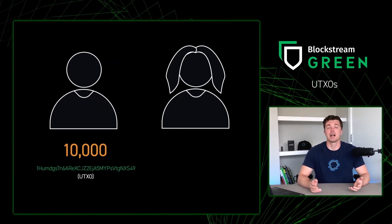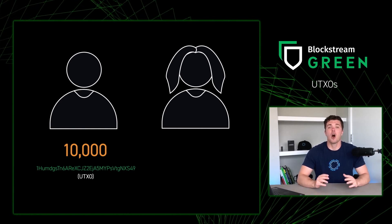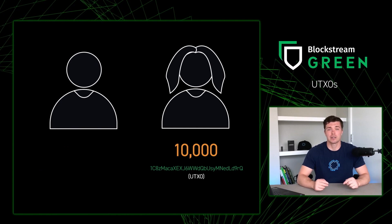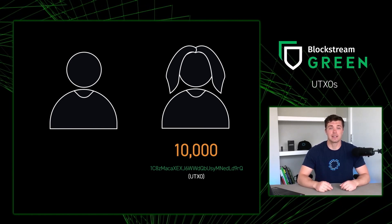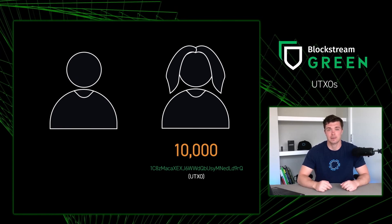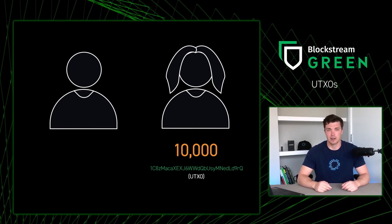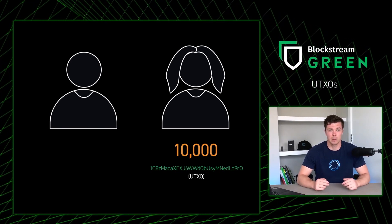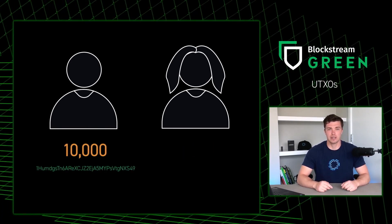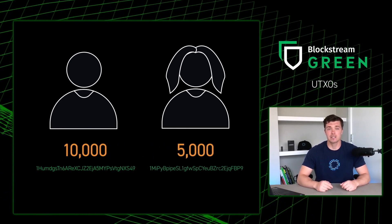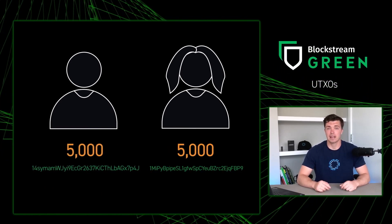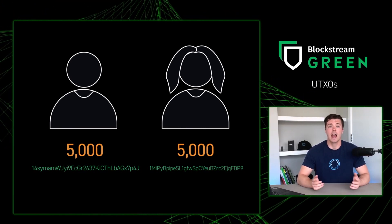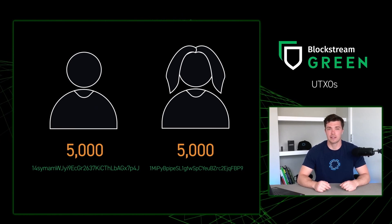Let's go back to Bob and Alice. In the first example, Bob sent Alice all 10,000 sats in one UTXO. Alice's wallet created one new UTXO to receive the 10,000 sats, and Bob's wallet deleted one UTXO. In the second scenario where Bob sent Alice only 5,000 sats, Bob's wallet sent the whole 10,000 sat UTXO; Alice received 5,000 sats in one brand new UTXO, Bob received 5,000 sats back in one brand new UTXO, and then Bob's wallet deleted the old 10,000 sat UTXO.